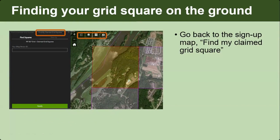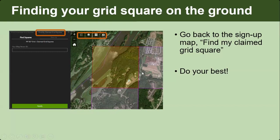For finding your grid square on the ground: go back to the sign-up map at the SLF webpage and use the 'Find My Grid Squares' option. Enter your Person ID and it will pull up what you claimed. You can print that, change the base map, and turn on different layers to pick out places to survey. One important thing to emphasize: just do your best. These grid squares are meant to direct people to areas where we need help surveying — if you do your surveys and you're actually a couple feet outside your grid square, that's not a problem.